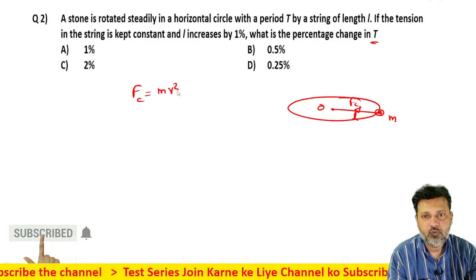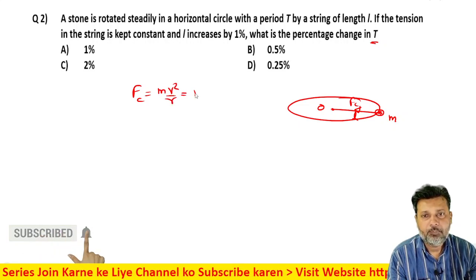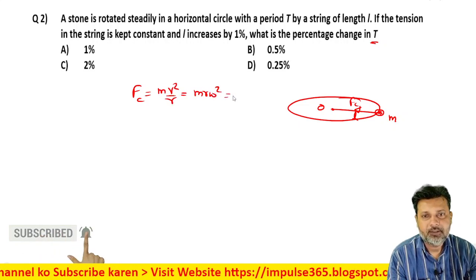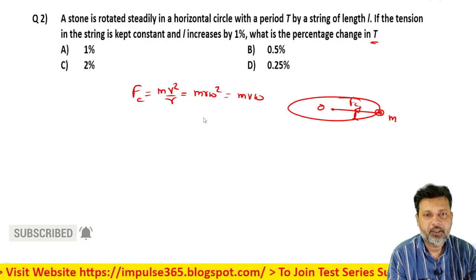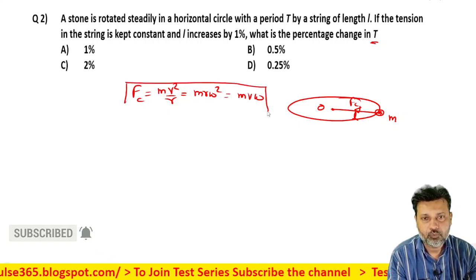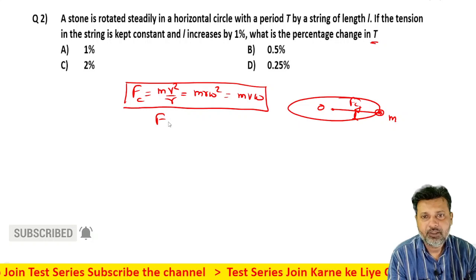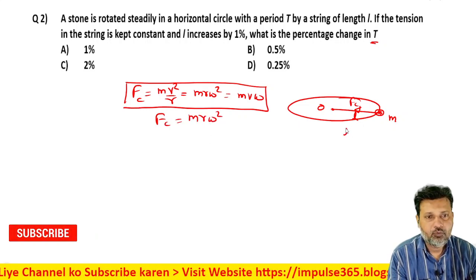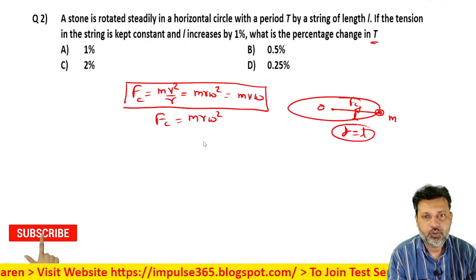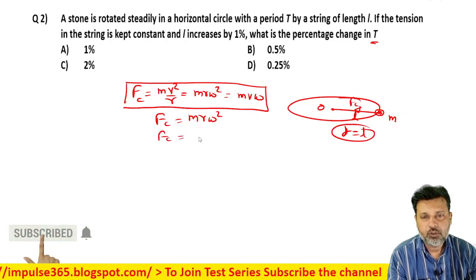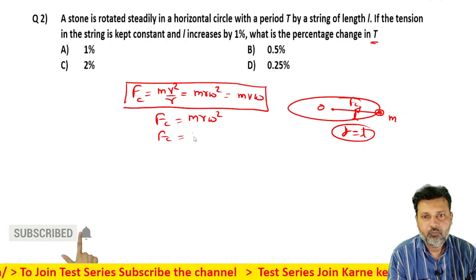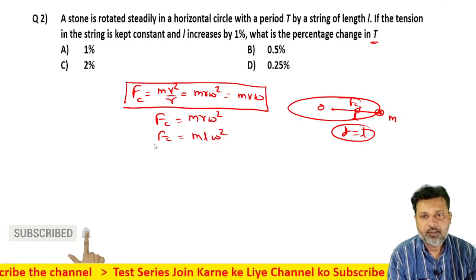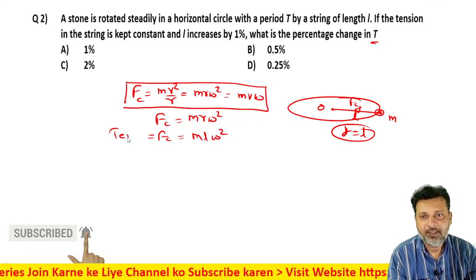mv squared by r, or mr omega square, or m into v into omega. These are the three forms of central force we use. mr omega square, where r ki value is L as given in the question. So centripetal force is m L omega square. Centripetal force, tension provides.